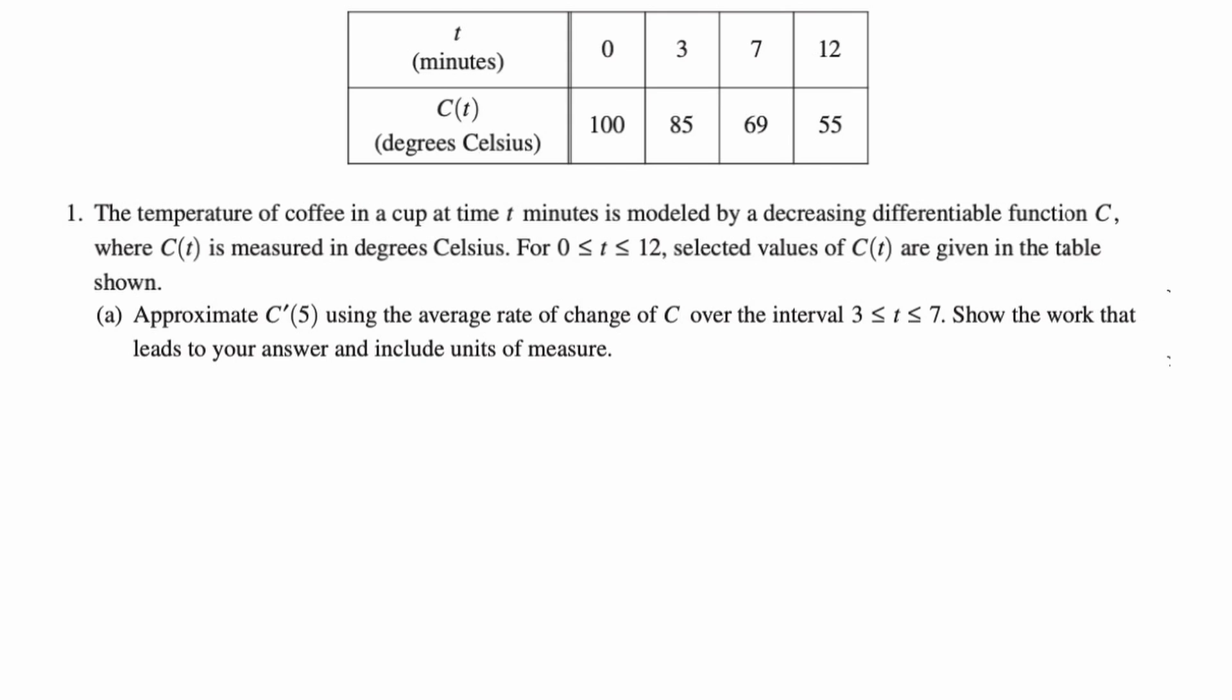All right, so first thing we're going to do is we're going to say C'(5) is approximately equal to, and then they told us what to do, so we're going to have C(7) minus C(3) over 7 minus 3. Now we're going to go to the table and find those values. So C(7), you can see, is 69. So 69 minus C(3) is 85, and then divide it by 4.